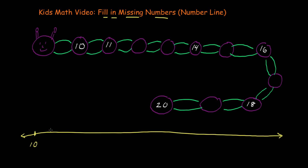What number comes after 10 in the number line? It's 11. And after 11, what comes next? 12. And after 12, what comes next? 13. And after 13? 14. And after 14? 15.